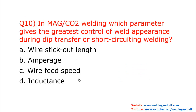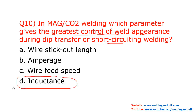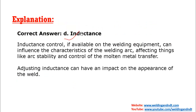Question number ten: in MAG or CO2 welding, which parameter gives the greatest control of weld appearance during dip transfer or short-circuiting welding? Options are wire stick-out length, amperage, wire feed speed, and inductance. The correct answer is inductance (option D). Inductance control not only reduces spatters but also controls weld appearance, influencing arc stability and the characteristics of molten metal transfer.